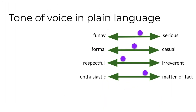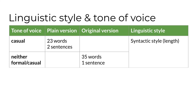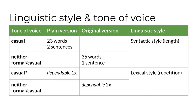Now read the plain language version I created. I believe the only change in tone from the original is that the plain version is on the casual side of the continuum. Let's consider how I altered linguistic style to create the plain language version and whether that affected tone of voice. The syntactic style of the plain version is shorter overall and shorter sentence length, which I think is part of what leads to the more casual tone of voice. Another difference in the plain version is the lack of lexical repetition — the original used the word 'dependable' twice, while the plain version used it just once. I'm not really convinced this one change alone altered the tone of voice; we actually need to test in order to find out.